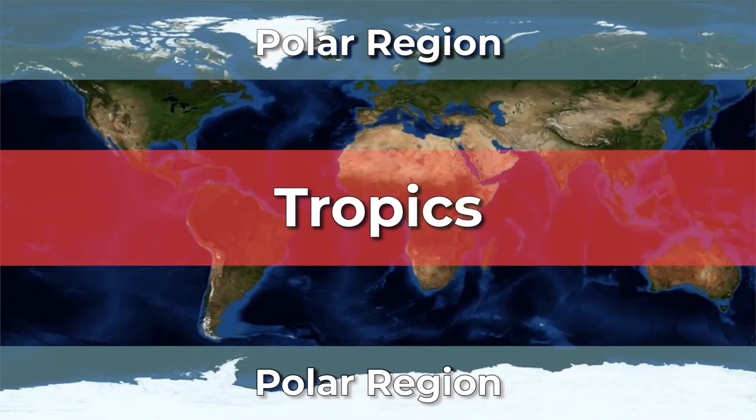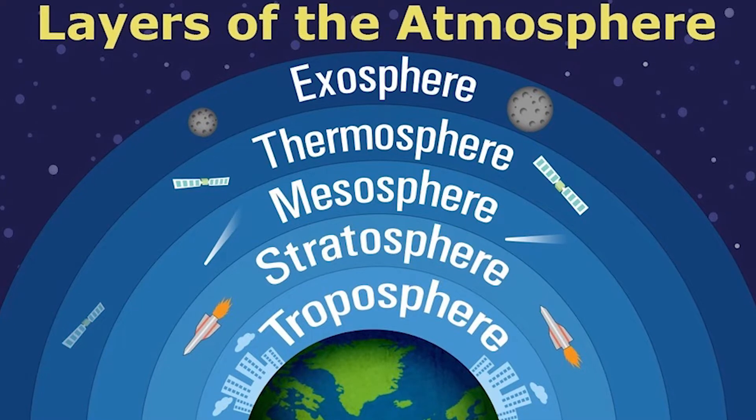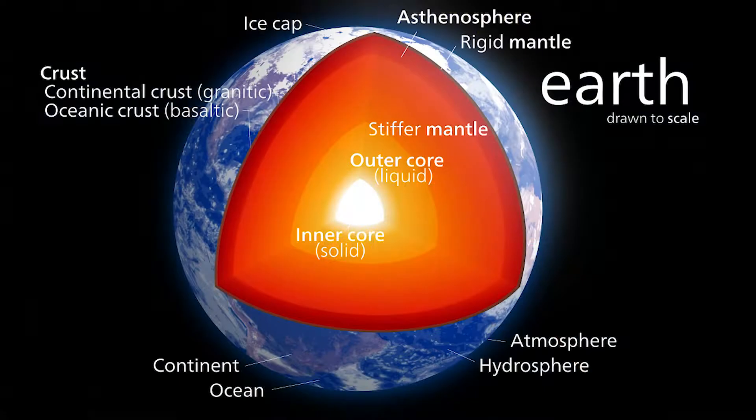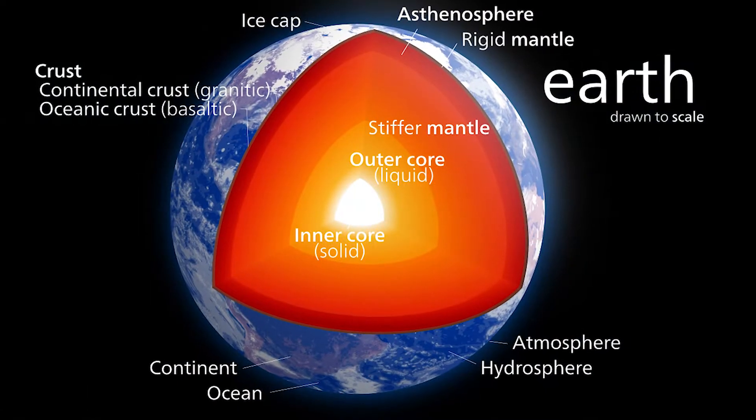We can't just jam a thermometer into the planet. That would be expensive, impractical, and ineffective — not unlike taking horse drugs to prevent Covid. And then there's the fact that the planet's temperature varies depending on where you are. The poles are colder than the tropics, the troposphere is warmer than the stratosphere, and the Earth's core is hotter than everything else combined. Except maybe Jeff Goldblum.